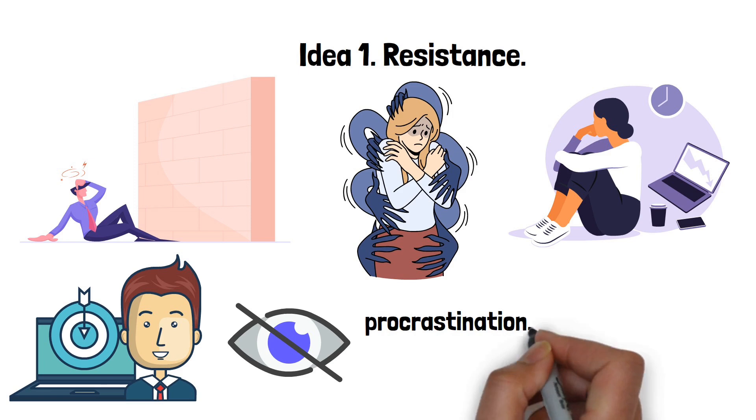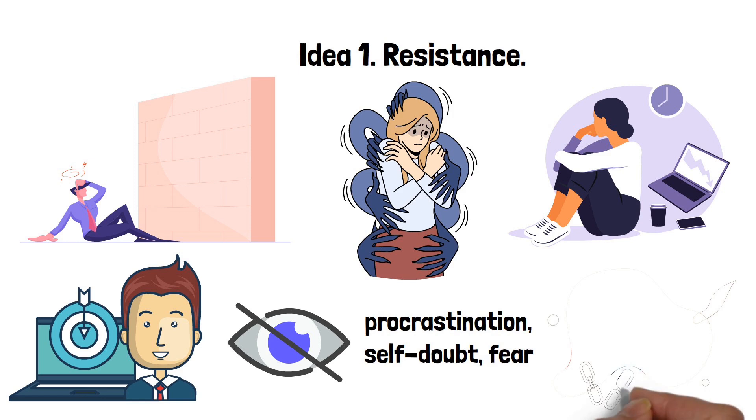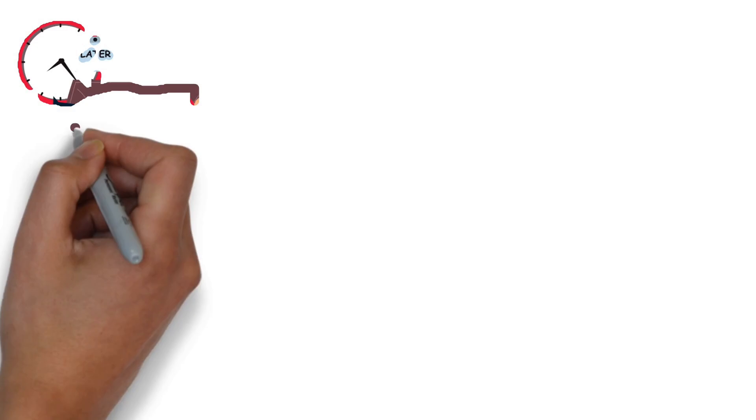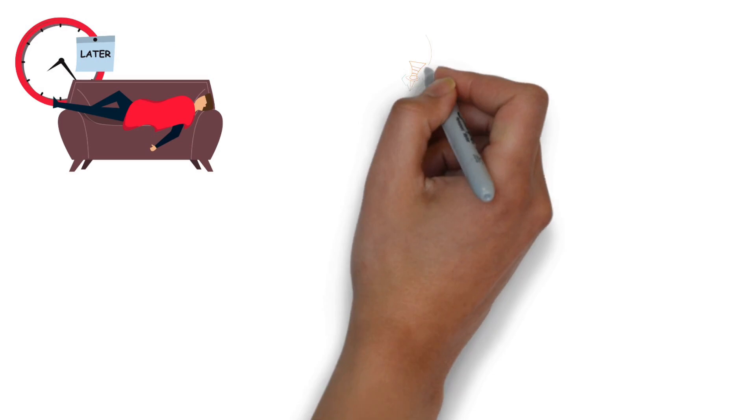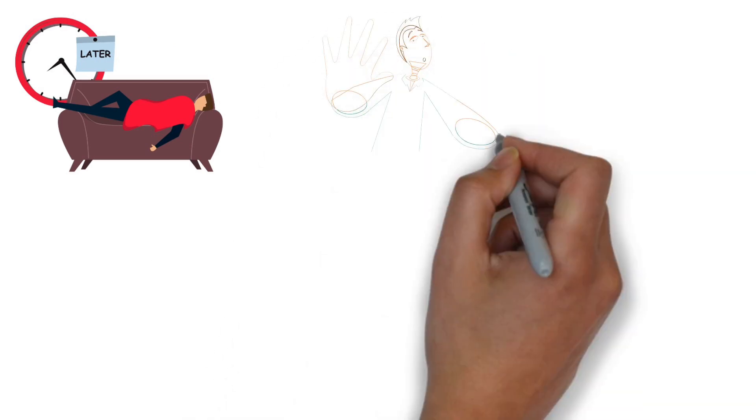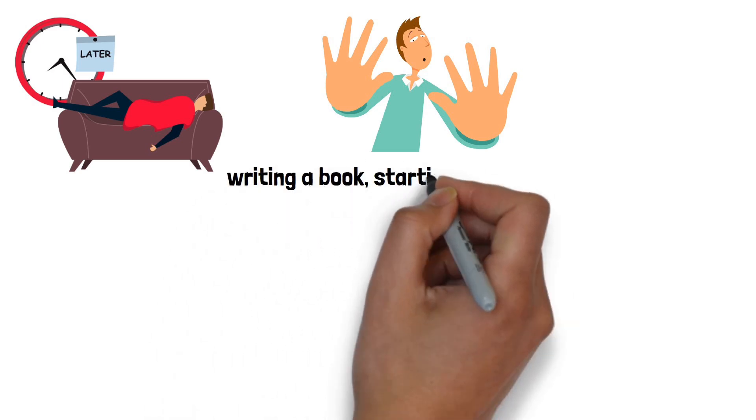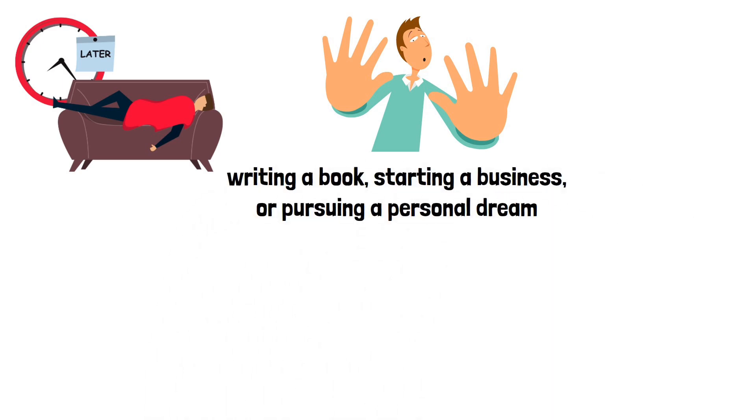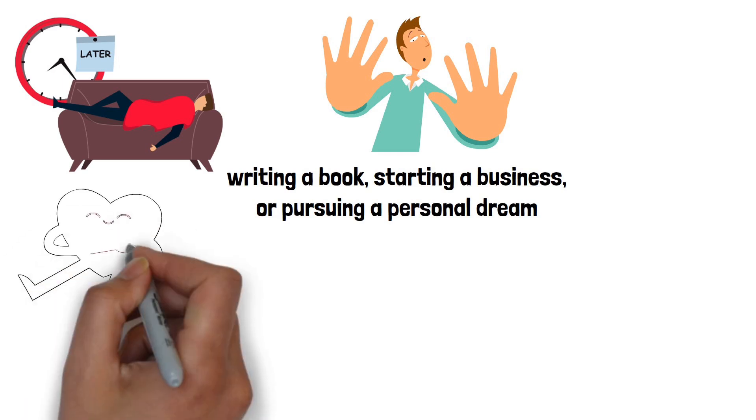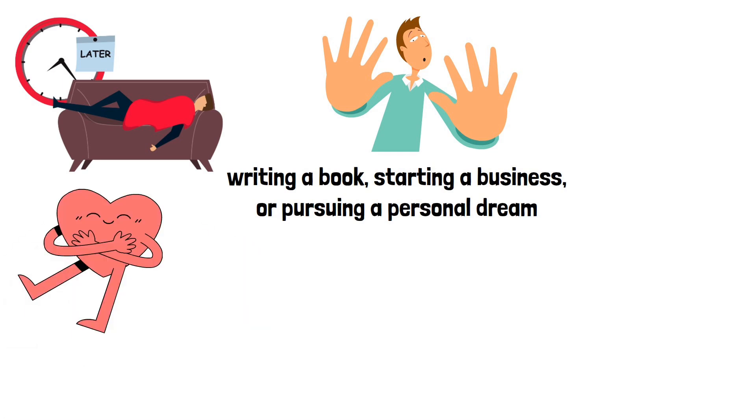It hides in different forms: procrastination, self-doubt, fear, and even distractions like spending too much time on social media or watching TV. It's what makes us say, 'I'll do it tomorrow,' when we know we should be doing it today. What's really interesting is that resistance often hits hardest when we're trying to do something that truly matters to us. Whether it's writing a book, starting a business, or pursuing a personal dream, the closer the project is to our heart, the stronger resistance can feel. It's like it knows where we're most vulnerable and attacks right there.